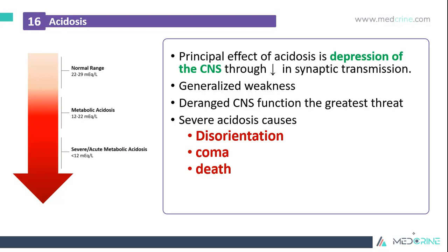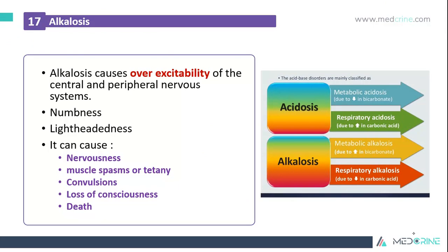The principal effect of acidosis is depression of the central nervous system through depression in synaptic transmission. These patients will present with generalized body weakness; the depressed central nervous system functions are the greatest threat, potentially leading to disorientation, coma, or even death in severe acidosis. In alkalosis, there is over-excitability of the central and peripheral nervous systems, so these patients will present with numbness, lightheadedness, nervousness, muscle spasms or tetany, convulsions, and loss of consciousness or death.